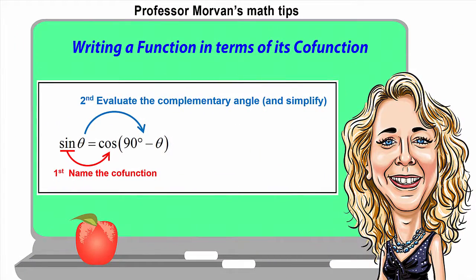A quick reminder: when writing a function in terms of its co-function, it's a simple two-step process. First, name the co-function. Second, evaluate the complementary angle — that is, 90 degrees minus the angle — and simplify the angle if necessary.